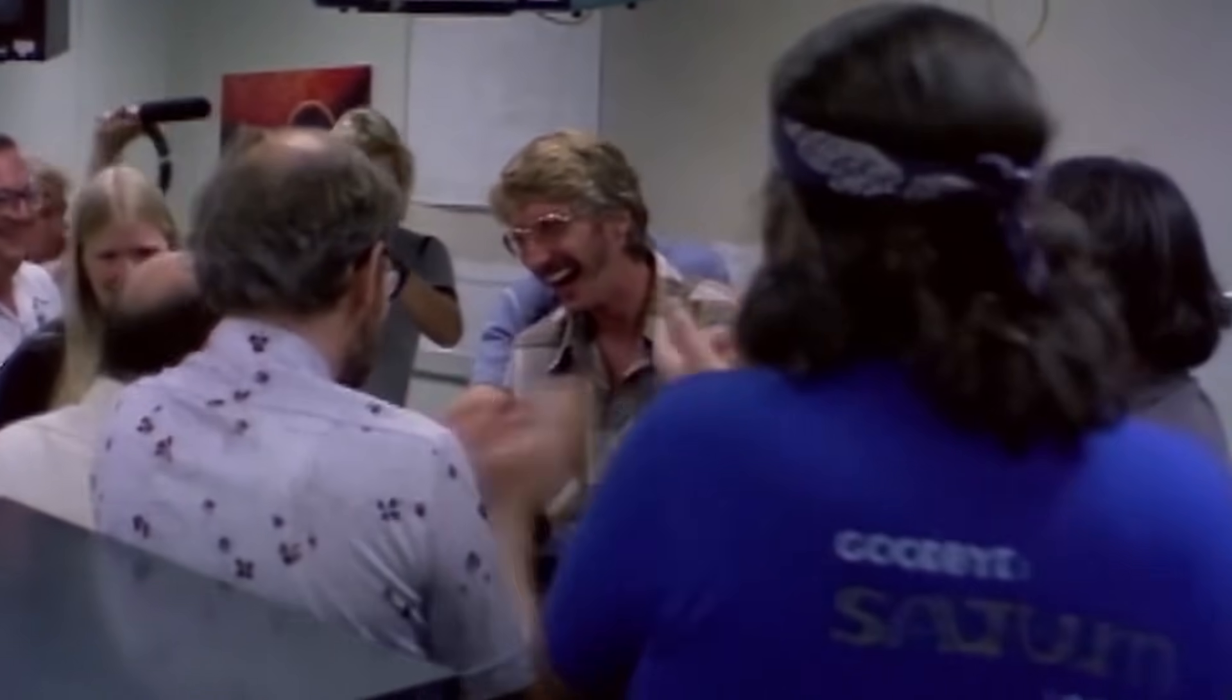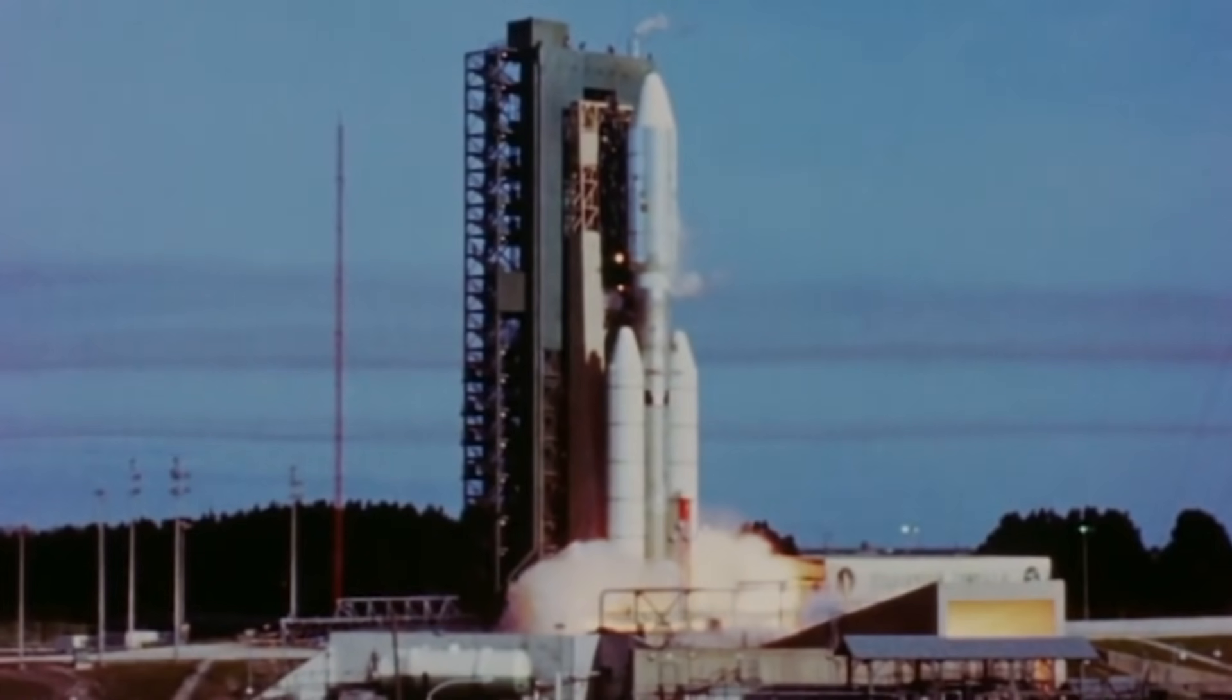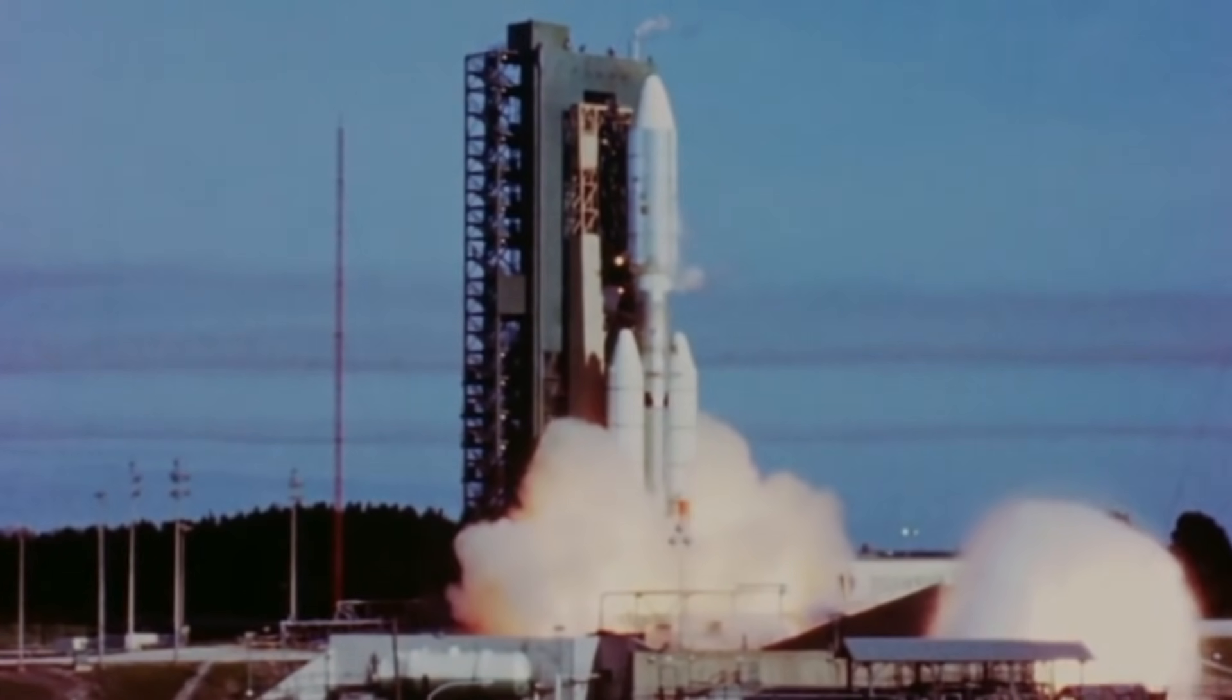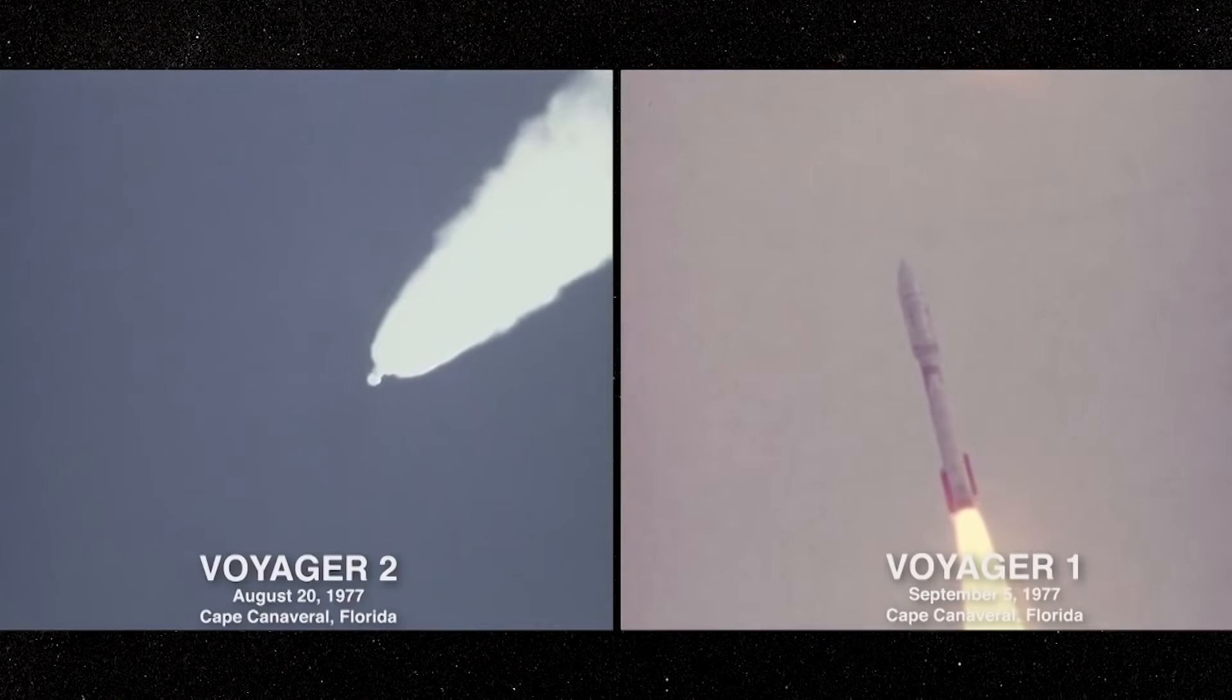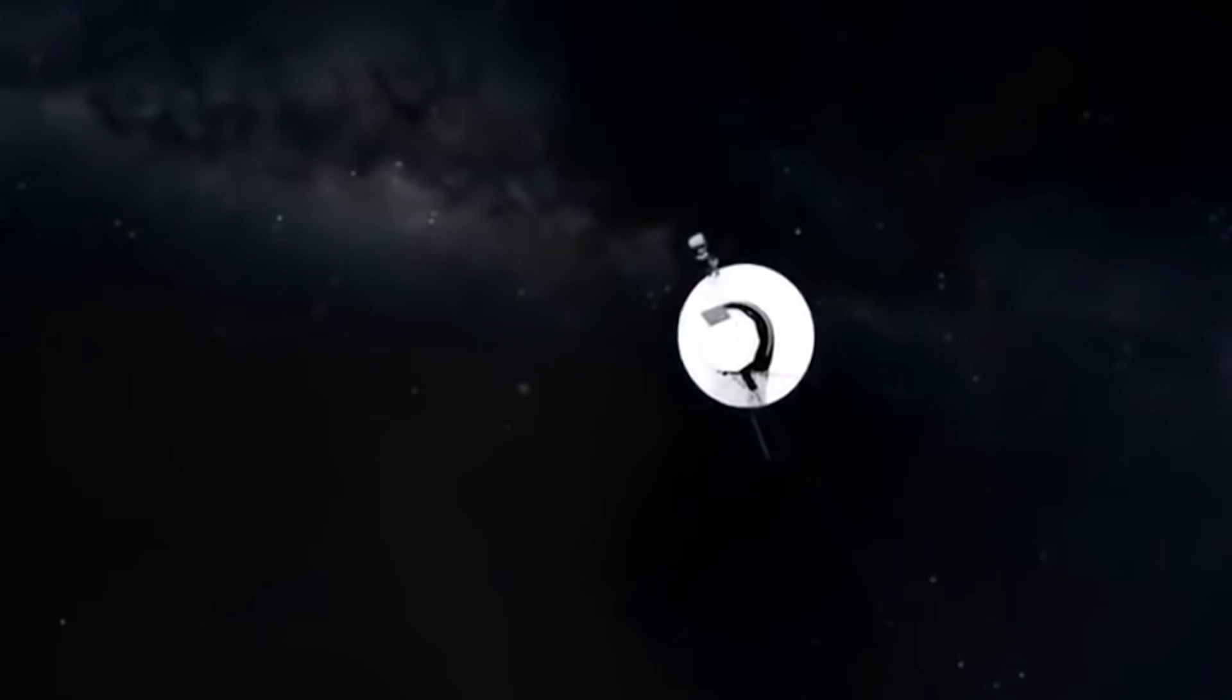In the fall of 1977, an unprecedented event happened that became a worldwide sensation. Two twin probes called Voyager 1 and Voyager 2 were launched into space with a difference of 16 days between them.